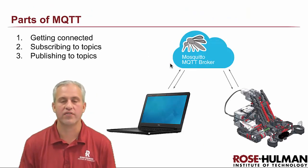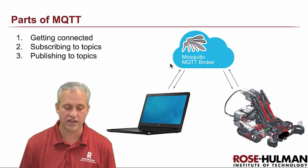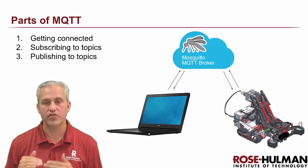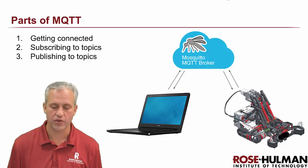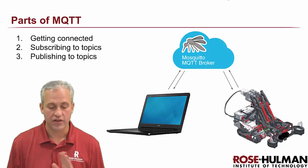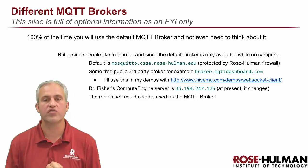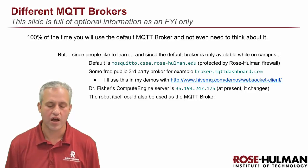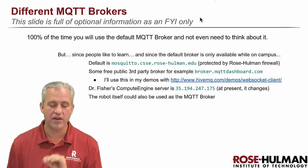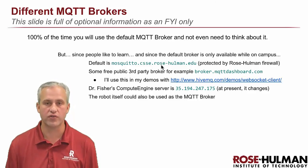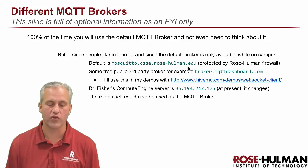There are different parts of MQTT. The first part is getting connected — you need to connect to the server and decide which server you're going to use. Then you're going to be publishing and subscribing to topics. By default, 100% of the time, I expect you'll use the default server, which is mosquito.csse.rosehulman.edu. That server runs on the Rose-Hulman campus.